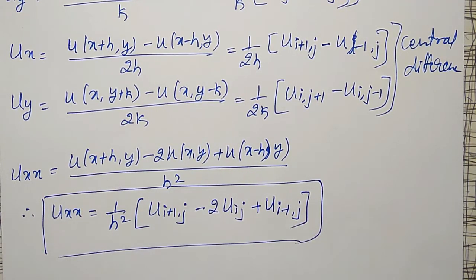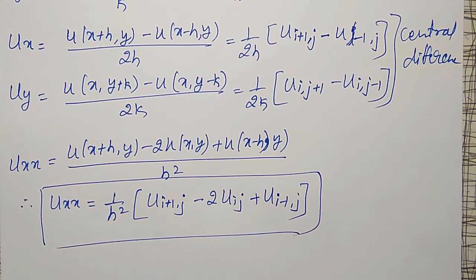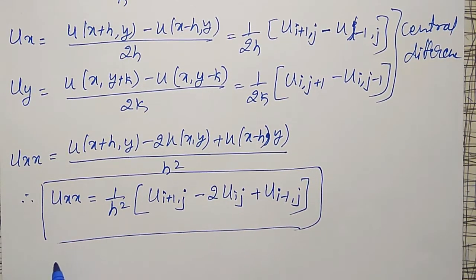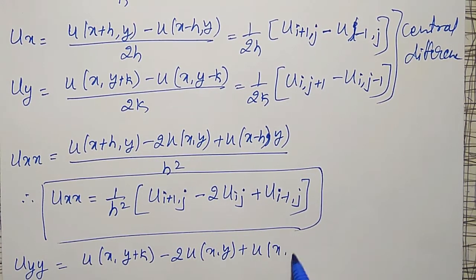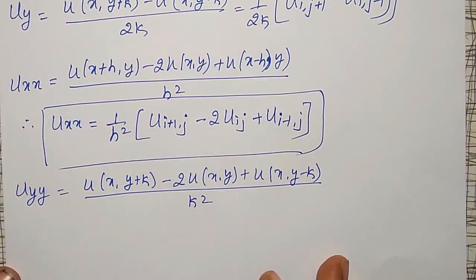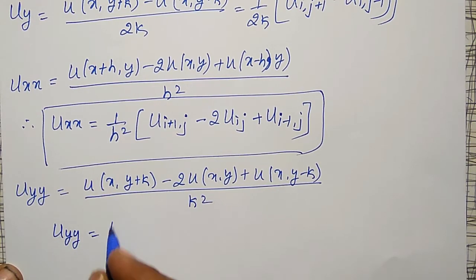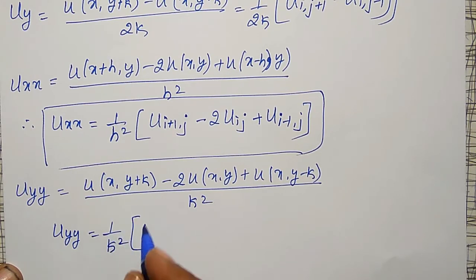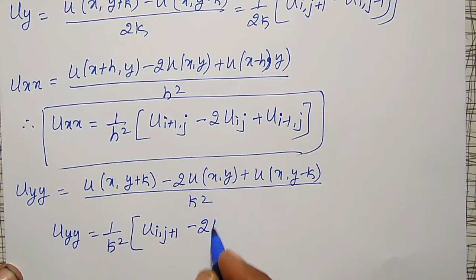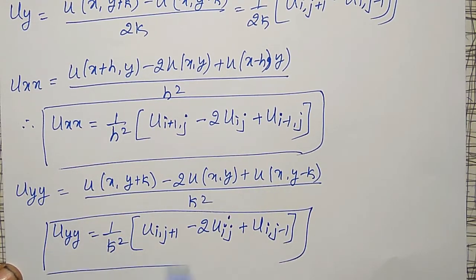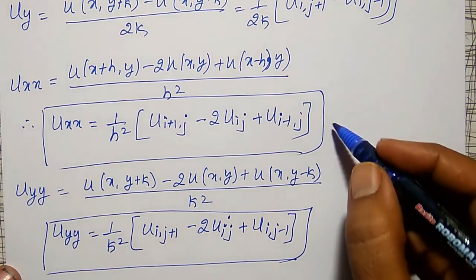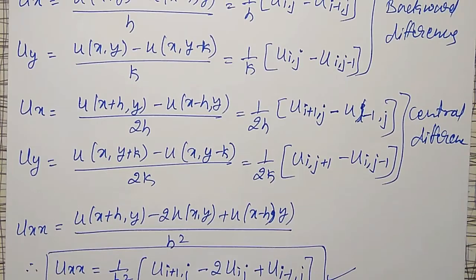In my next videos I will use this to derive explicit formulas for wave and heat equations. Similarly, u_yy is defined as u of x comma y plus k minus 2 times u of x, y plus u of x comma y minus k, whole divided by k squared, where k is the increment in y. In short notation, u_yy equals 1/k² times u_{i, j+1} minus 2·u_{i, j} plus u_{i, j-1}. This is the notation for u_yy.